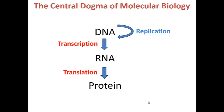This led to the central dogma, which states that DNA leads to RNA leads to protein. The process of transcription is where DNA is used as a template to make RNA, and the process of translation is where RNA is used as a template to make protein. We're going to talk about these two processes in class, so first we need to review the structure of RNA and the structure of proteins.